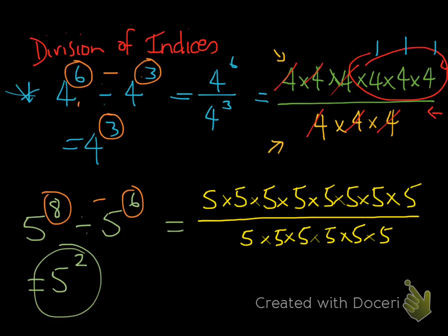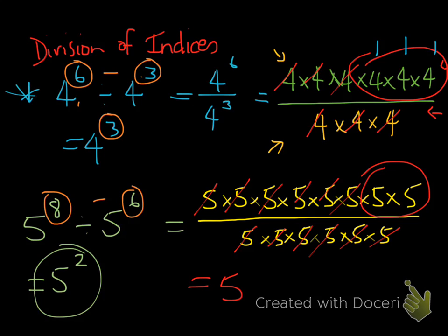We've got 6 fives on the bottom. Now let's start cancelling — for every 5 on the bottom, we cancel a 5 on the top: 1, 2, 3, 4, 5, 6. All our 5s on the bottom are gone, and we're left with 2 fives, which equals 5 to the power of 2. Our theory was correct.